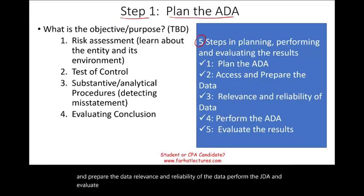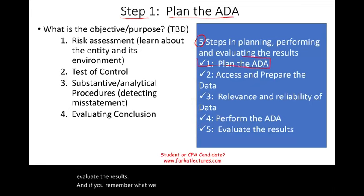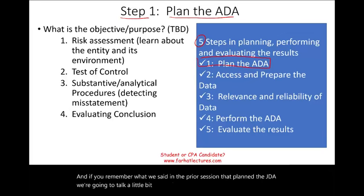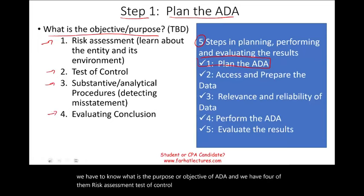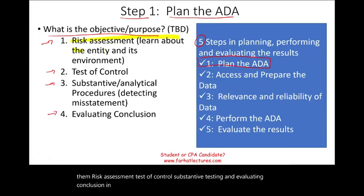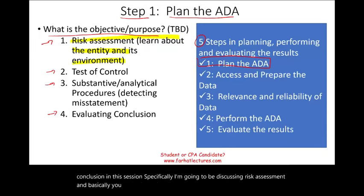If you remember what we said in the prior session — plan the ADA — we're going to talk a little bit more about this step. In planning the ADA, we have to know what is the purpose or objective, and we have four of them: risk assessment, test of control, substantive testing, and evaluating conclusion. In this session, specifically, I'm going to be discussing risk assessment and basically learning about the entities and their environment.